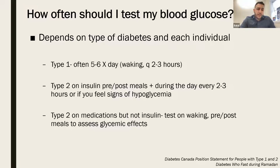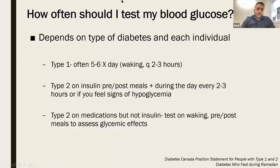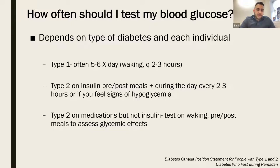How often should you test? It depends on the type of diabetes, the individual, and your risk factors. Type 1 diabetes patients or type 2 patients who are on insulin will need to test more frequently, because insulin — or any medication that increases the body's production of insulin — makes you more prone to having a low blood sugar. The literature recommends checking every two to four hours while fasting. At minimum, check in the morning and after your meal. If you're on medications but not on insulin with type 2 diabetes, at minimum test when you wake up and a third time as well.